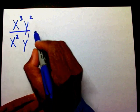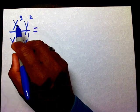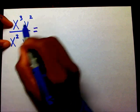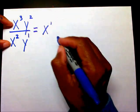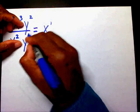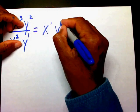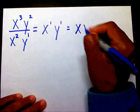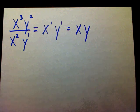If I apply my rule: since I have x to the third divided by x to the second, I keep my base and do 3 minus 2, which is 1. Then y to the second divided by y to the first — I keep my base y and do 2 minus 1, which is 1. So my answer is x times y, or just xy.